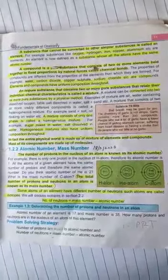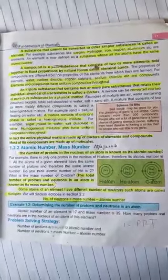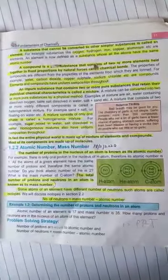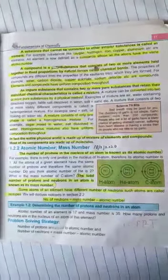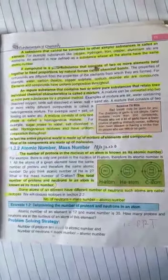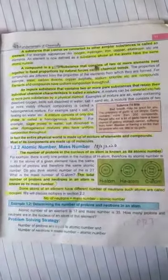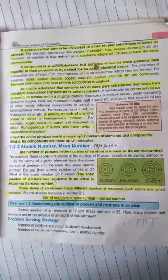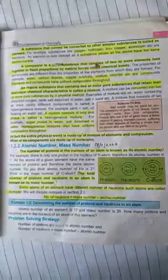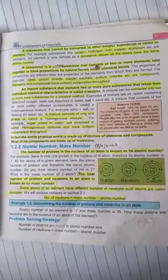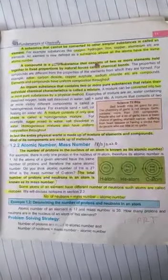Next one is mass number. Now mass number is combination. The total number of protons and neutrons in an atom is known as mass number.